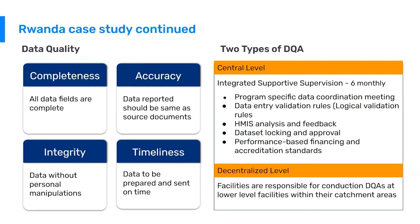Rwanda, like most countries, is very concerned with completeness, accuracy, integrity, and timeliness of data. Completeness means all data fields have been completed. Accuracy means the data reported should match the source documents — what we've defined earlier as verification. Integrity means the data is free from personal manipulations and has not been tampered with; this is enforced by locking the data after the tenth of the month. Timeliness means the data is prepared and submitted on time.